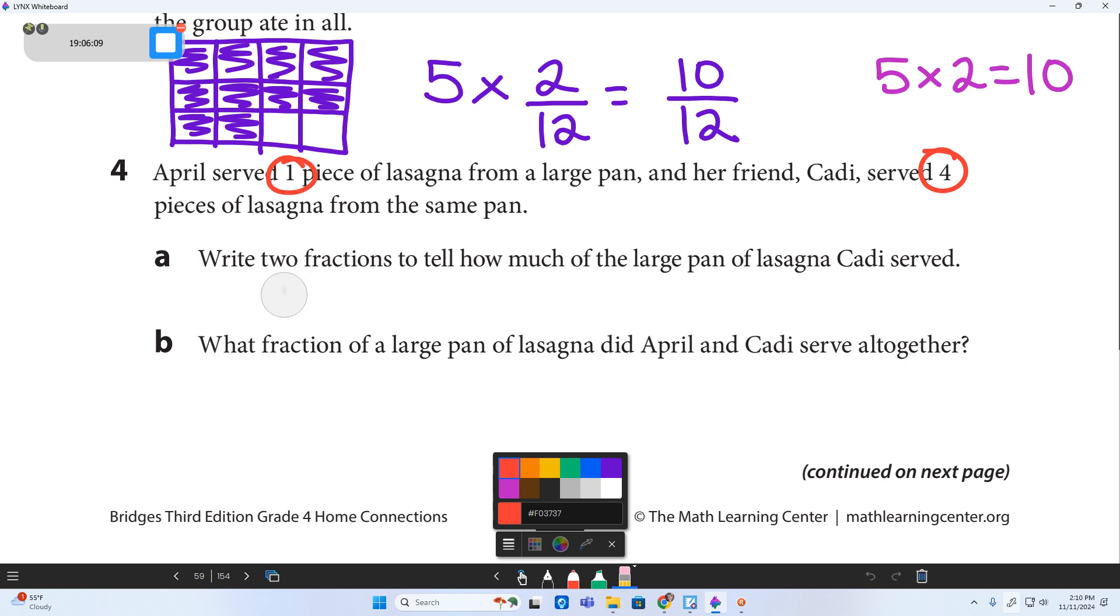One out of 12, there's April. And four out of 12, there's Cadi. And then it says, what fraction did they serve all together? Here is where we're going to put them together. Silly Mrs. Judson. Alright. And when you add one twelfth plus four twelfths. This is actually easier than I thought. I just misread it. Or didn't read far enough, maybe. One twelfth plus four twelfths equals five twelfths. And there's our final answer. Alright. Moving on to the back.